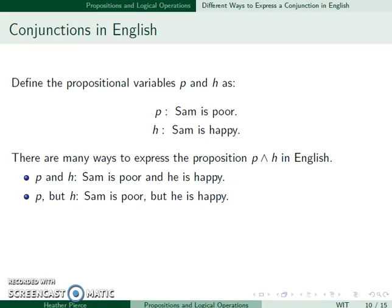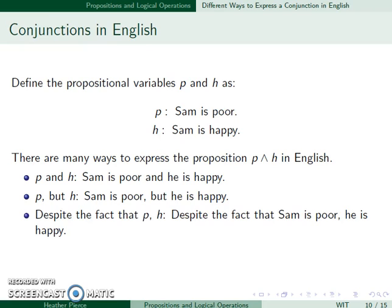P, but H: Sam is poor, but he is happy. Despite the fact that P, H: despite the fact that Sam is poor, he is happy. And one more, although P, H: Although Sam is poor, he is happy.